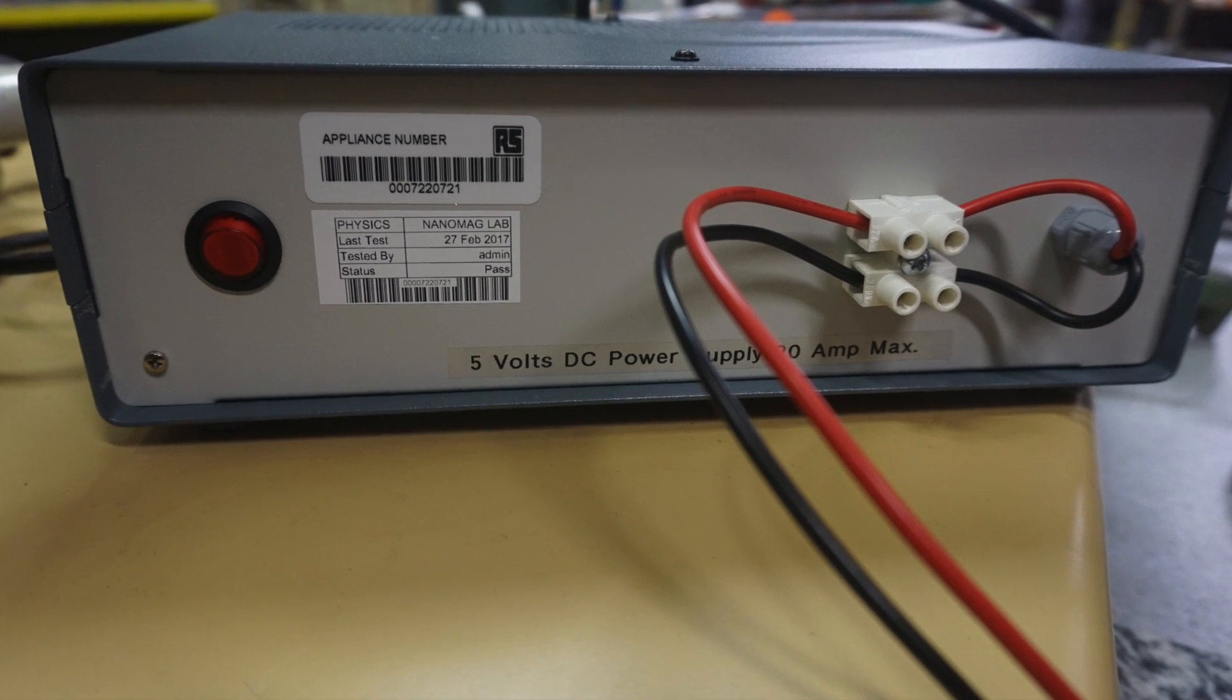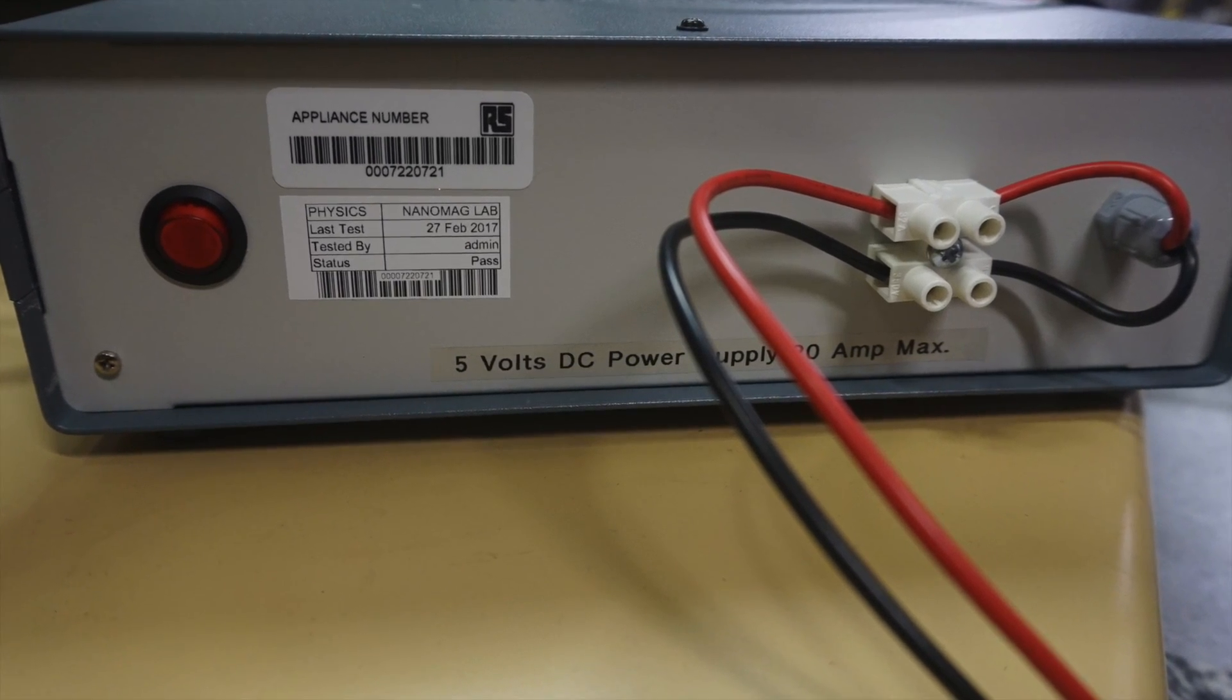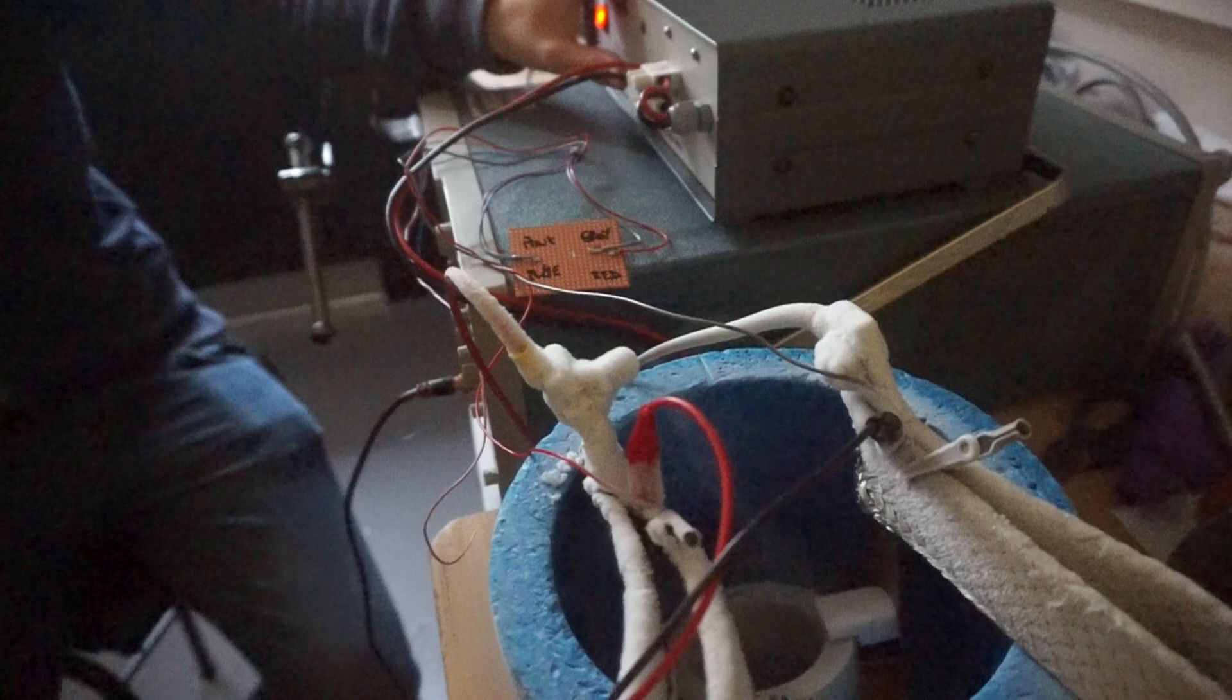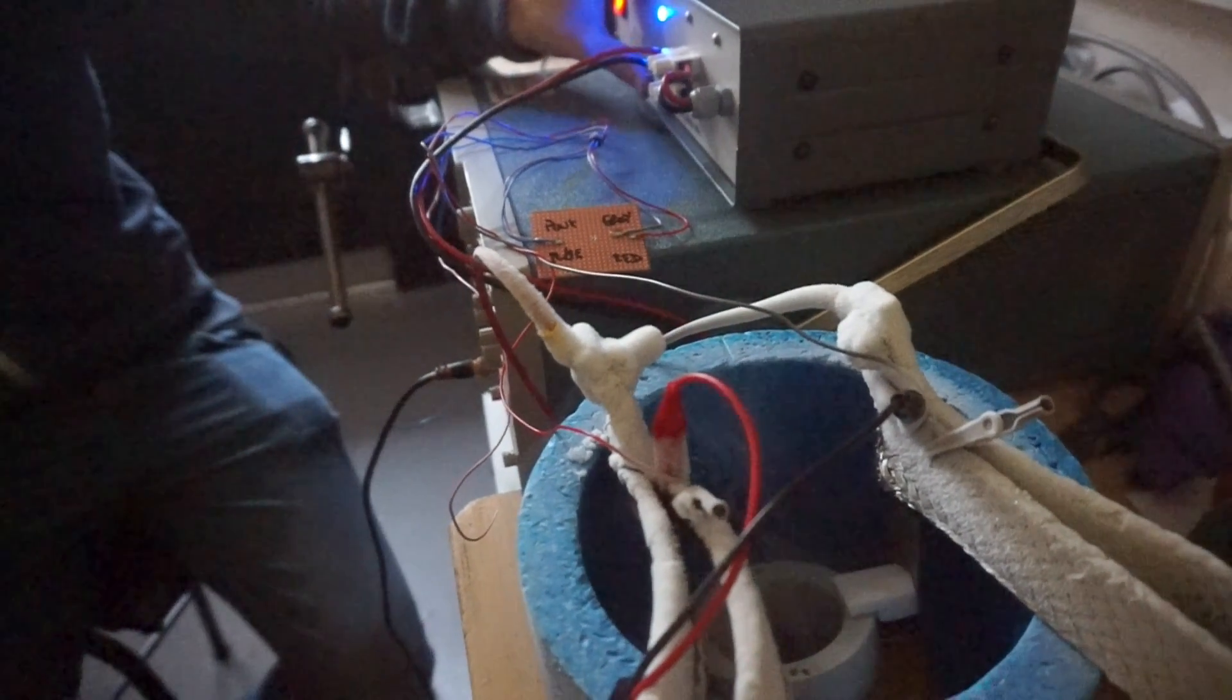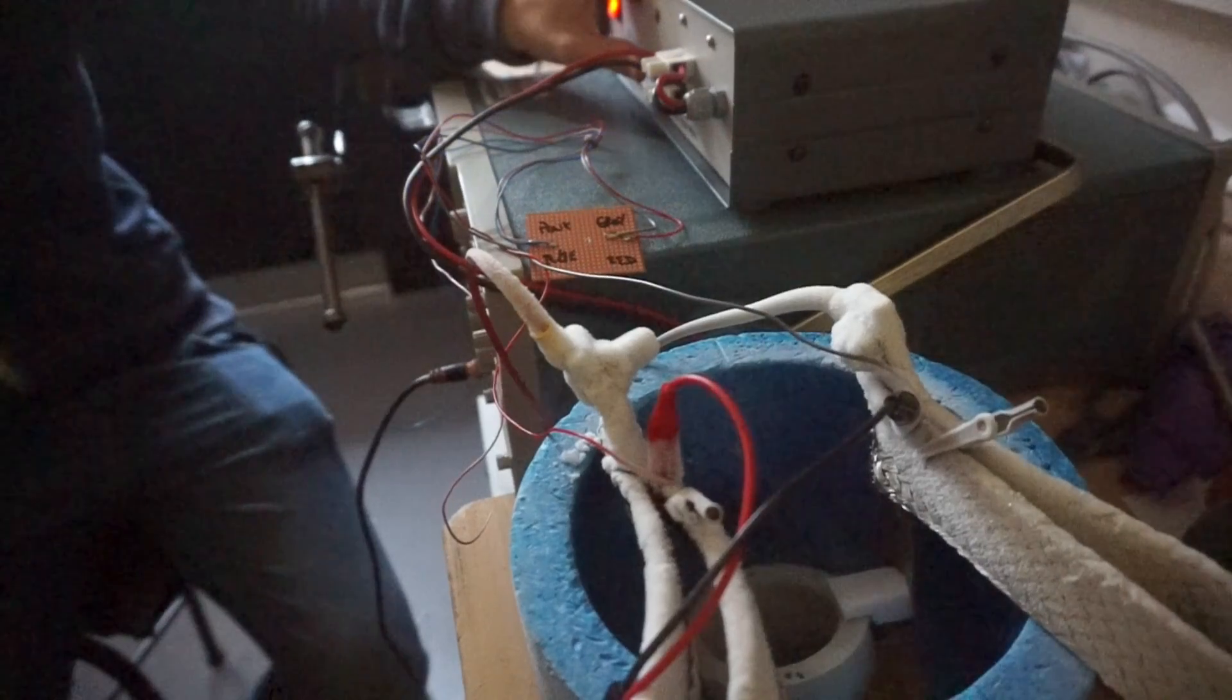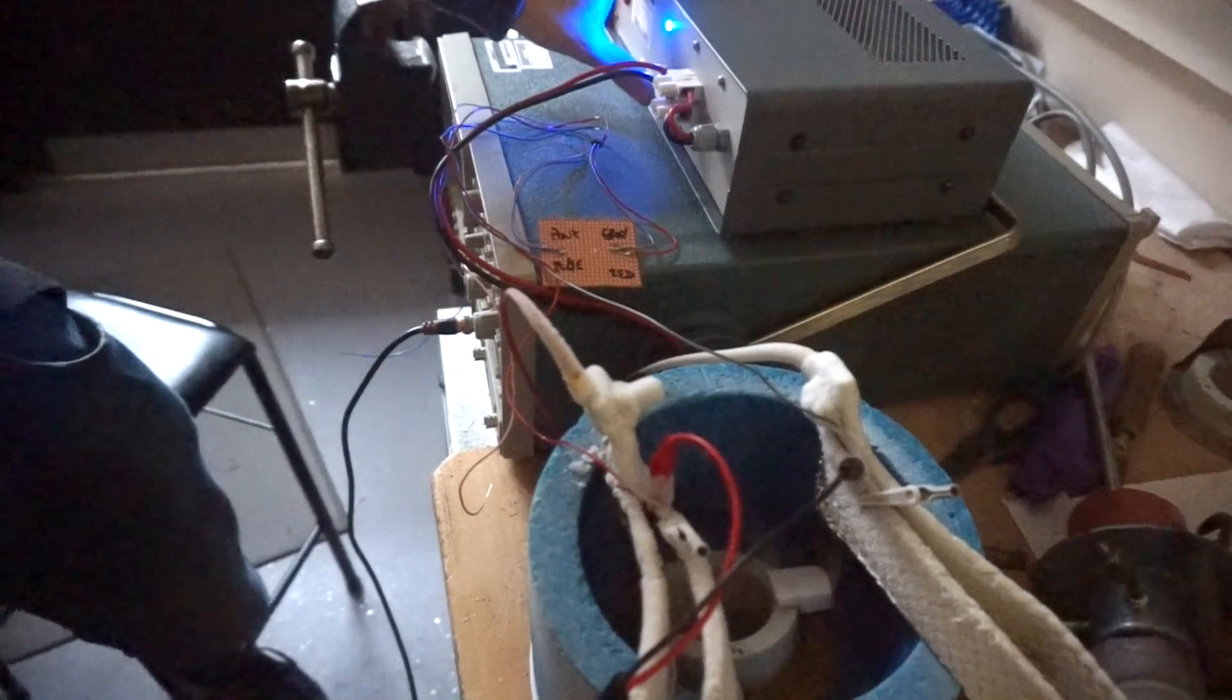To charge the device, we used a 5 volt 20 amp power supply. Once connected to the circuit, the coil was then submerged in liquid nitrogen. When the power supply was disconnected, the coil discharged through the LED, causing it to flash, thereby demonstrating energy was stored in the coil.